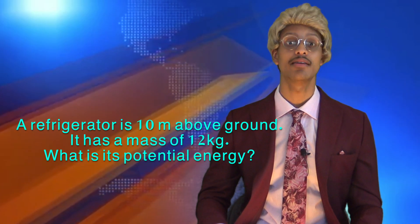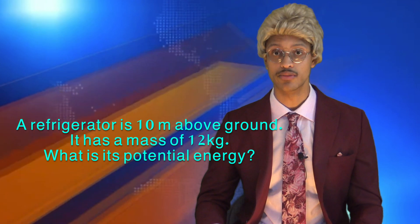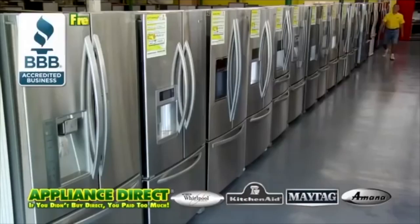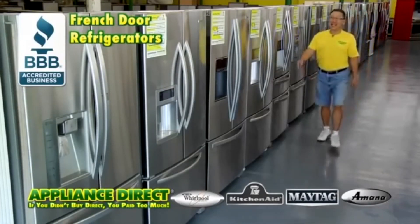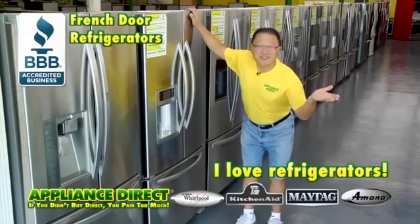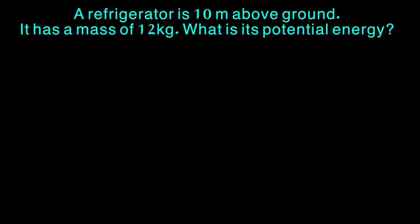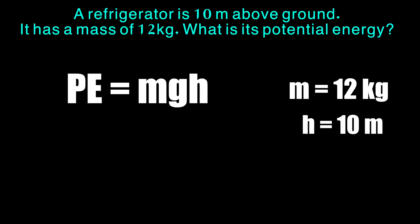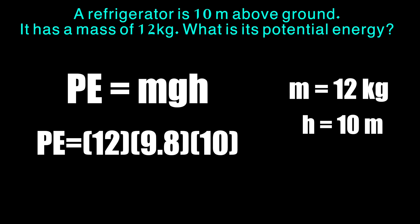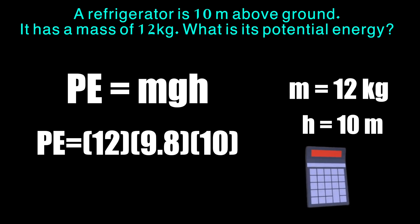A refrigerator is 10 meters above ground. It has a mass of 12 kilograms. What is its potential energy? Once again, we'll need our formula for potential energy: PE equals mgh. We have our mass — 12 kilograms — and our height — 10 meters. The acceleration of gravity on Earth is 9.8 meters per second squared. When you plug all that in, whether using a calculator or just your brain, you'll be able to figure it out smoothly.